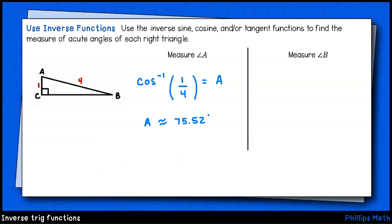Go ahead and pause and set up angle B on your own. We have the side opposite B and the hypotenuse. So we'll use inverse sine this time. To set it up, we'll have inverse sine of one fourth equals B. Our calculator gives approximately fourteen point four seven degrees. Keep it up. We're doing great.